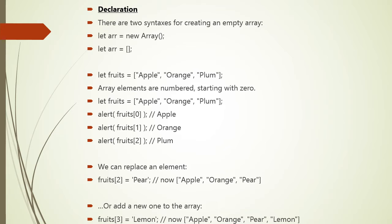Array elements are numbered starting with 0. We can get an array element by its number in square brackets. For example: let fruits = ['apple', 'orange', 'plum']. If you say alert(fruits[0]), the output will be 'apple'. If you say alert(fruits[1]), the output will be 'orange'. We can replace an element: fruits[2] = 'pear', so the array becomes ['apple', 'orange', 'pear']. Or we can add a new element: fruits[3] = 'lemon', making the array ['apple', 'orange', 'pear', 'lemon'].